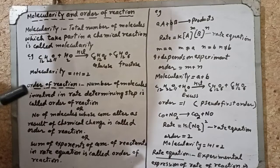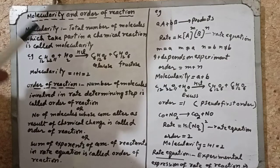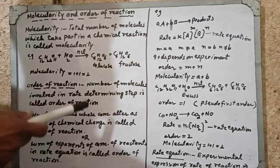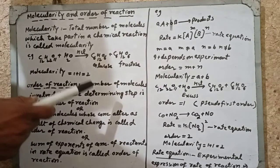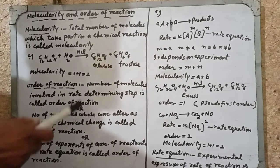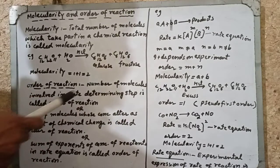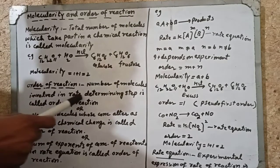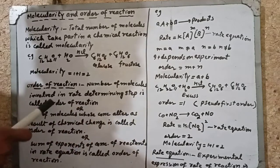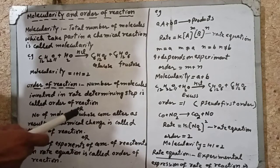When a reaction takes place in more than one step, then one of the steps is the slowest step. The slowest step is called the rate determining step. The number of molecules involved in the rate determining step is called the order of reaction.